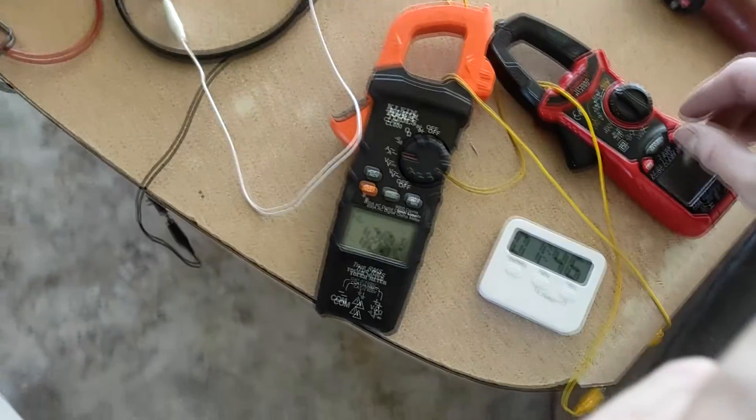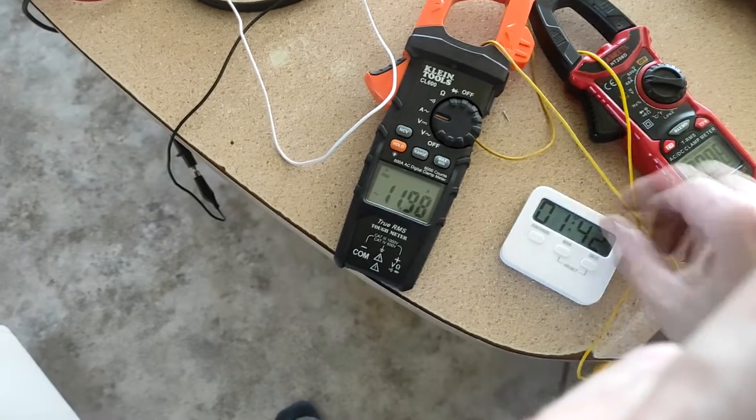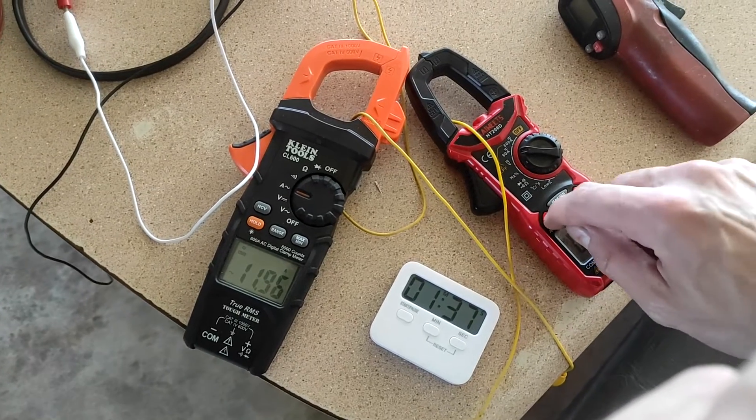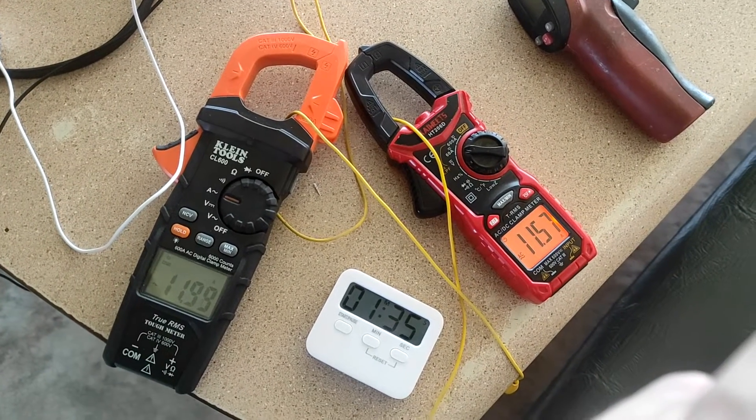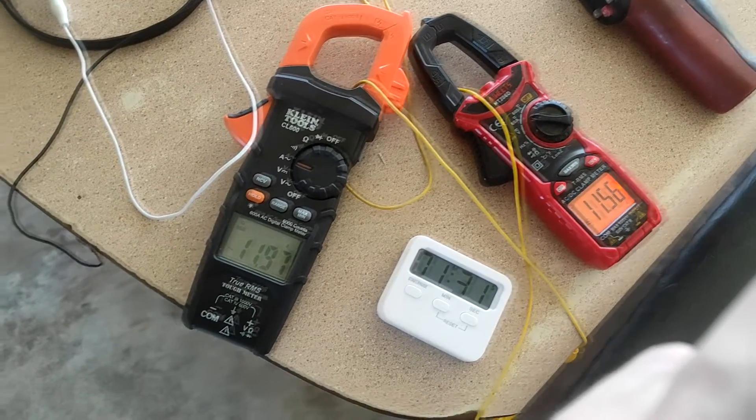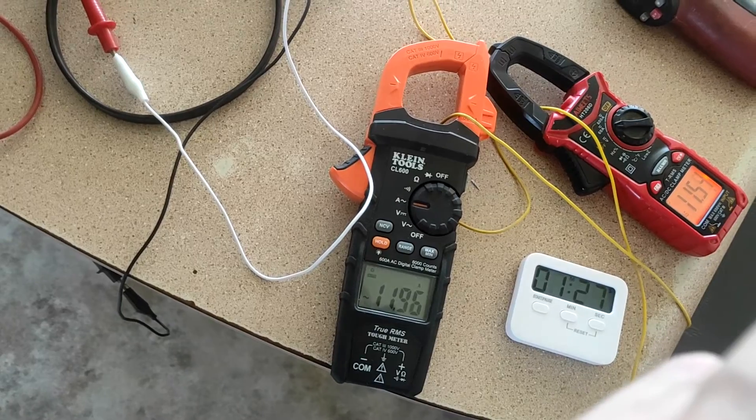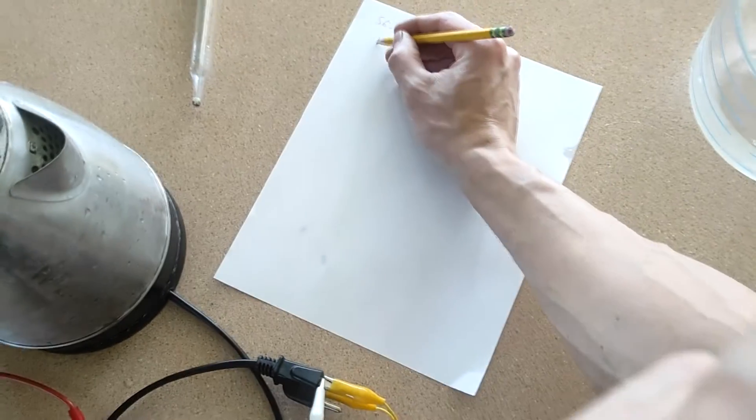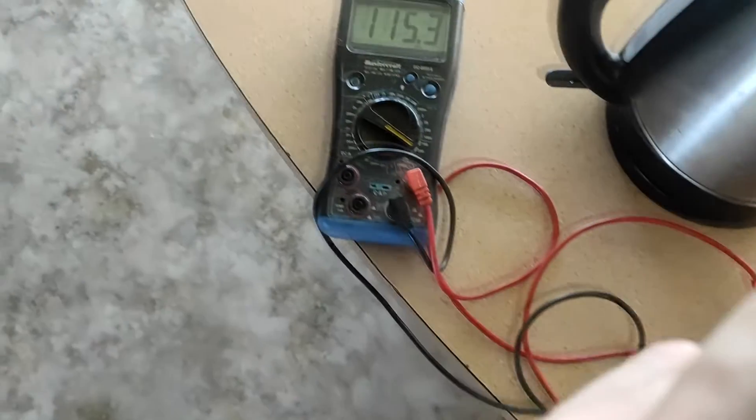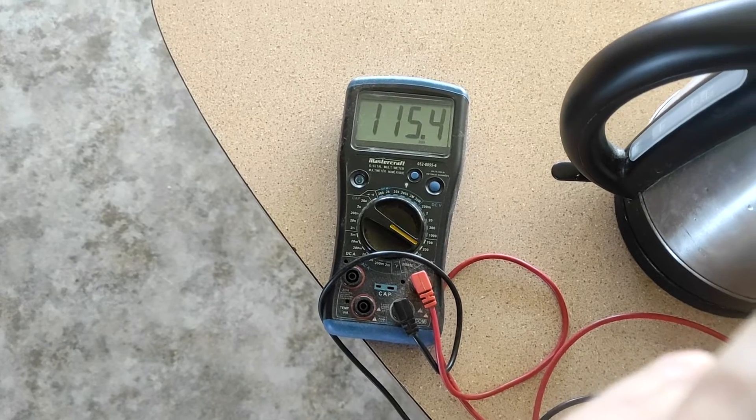We've got two amp clamps here. We're reading 12 amps. Hopefully these wires don't melt. 11.56. We'll go with this one: 11.95 amps. And we got 115.4 volts.